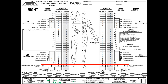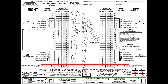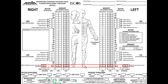Let's check our answer: T1, C8, C6, C7, and the neurological level is C6. Is the injury complete or incomplete? We look at the last row and we see it's none, so it is a complete injury.